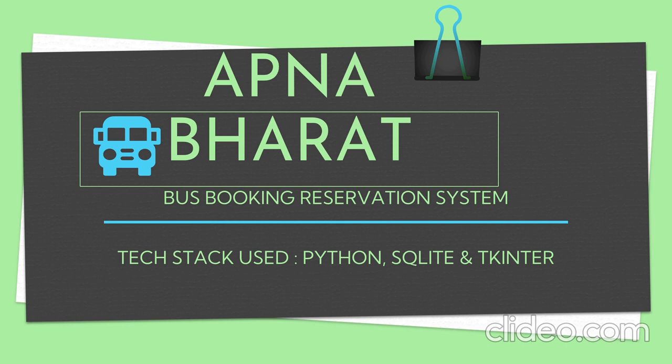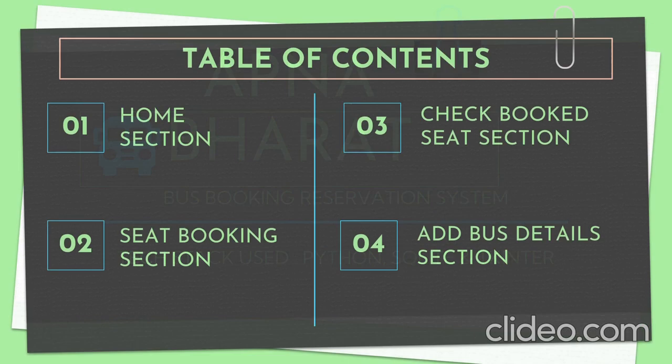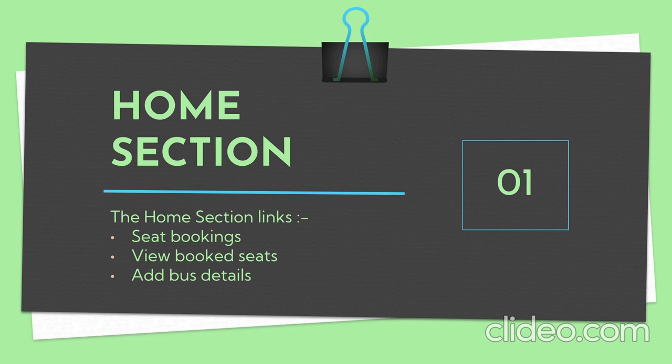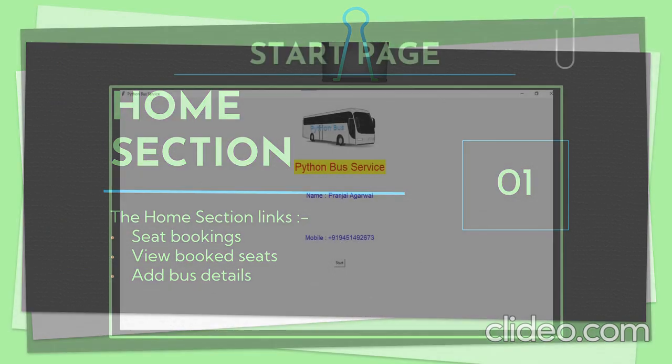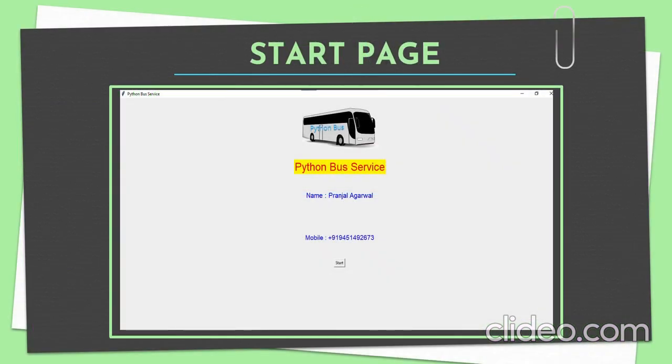Here is my table of contents, which includes the home section, seat booking section, check booked seat section, and add bus detail section. In the home section, there are mainly three sections: seat booking, view booked seat, and add bus details.